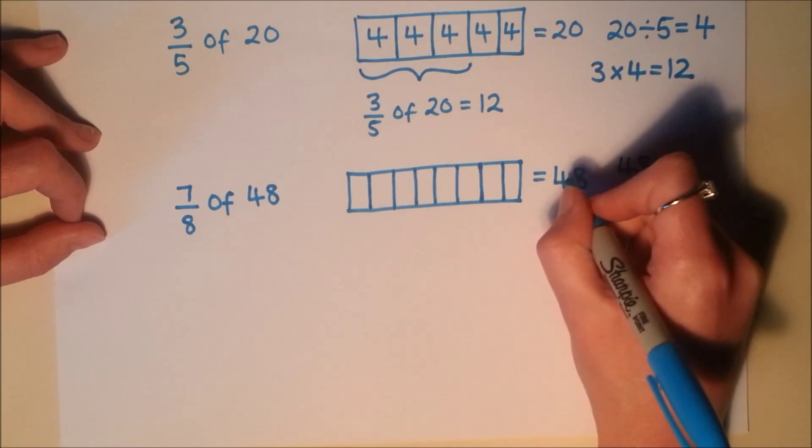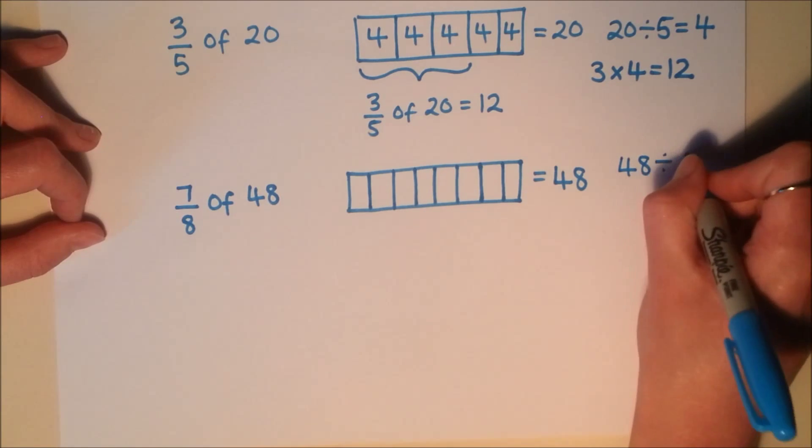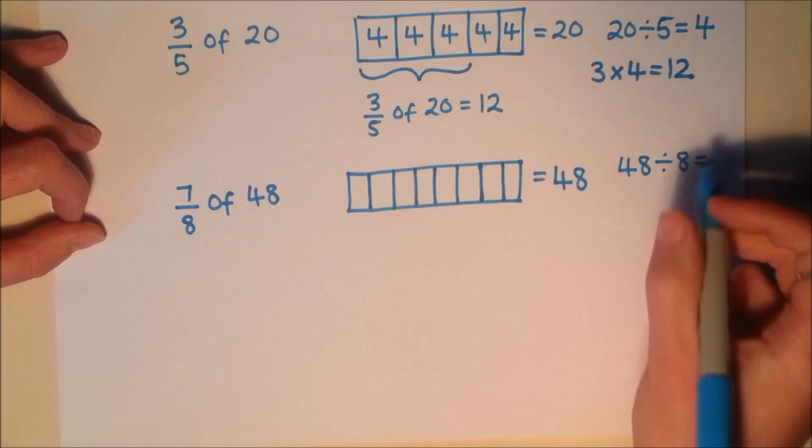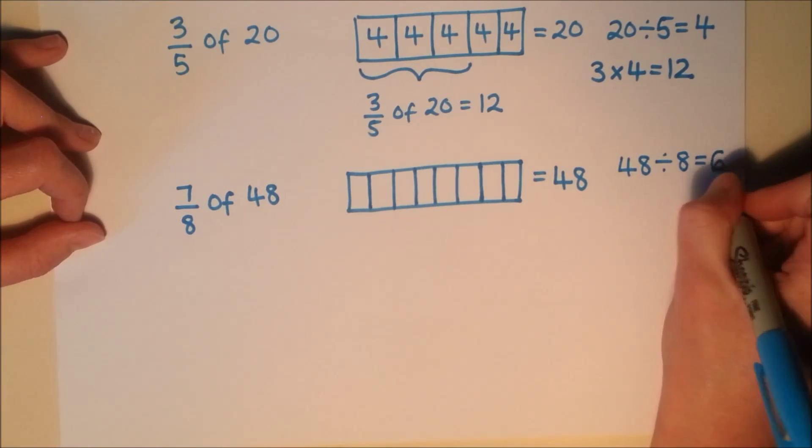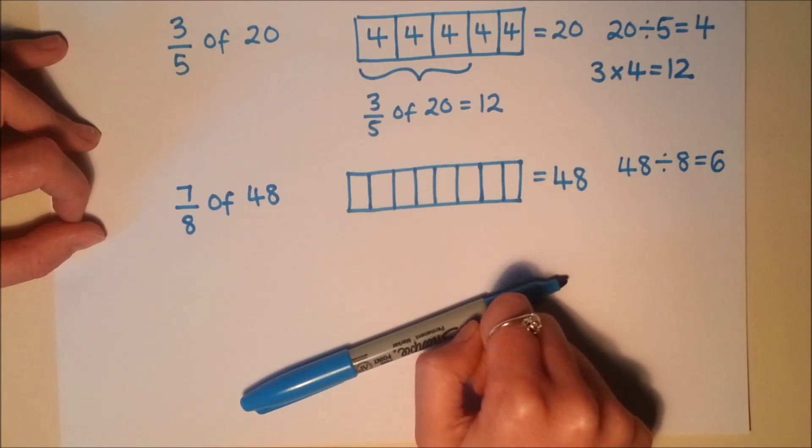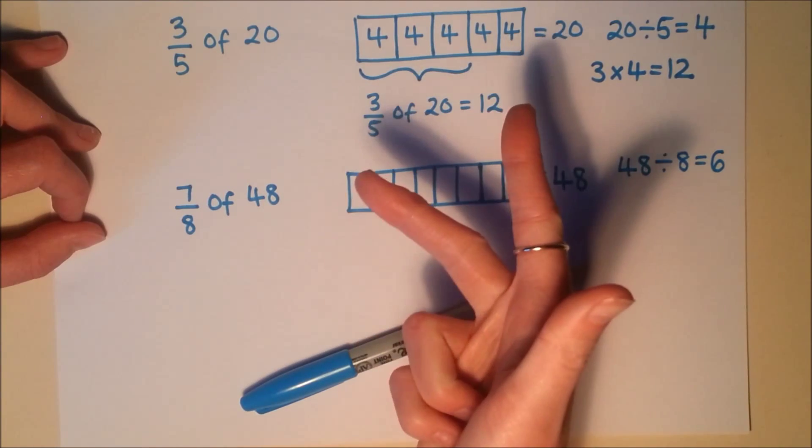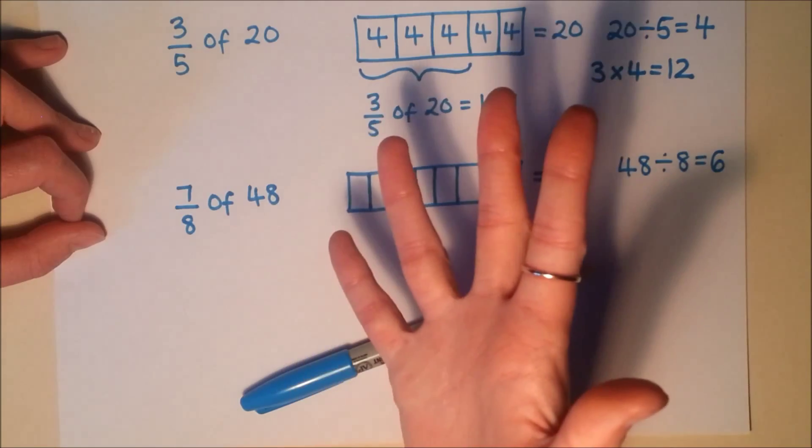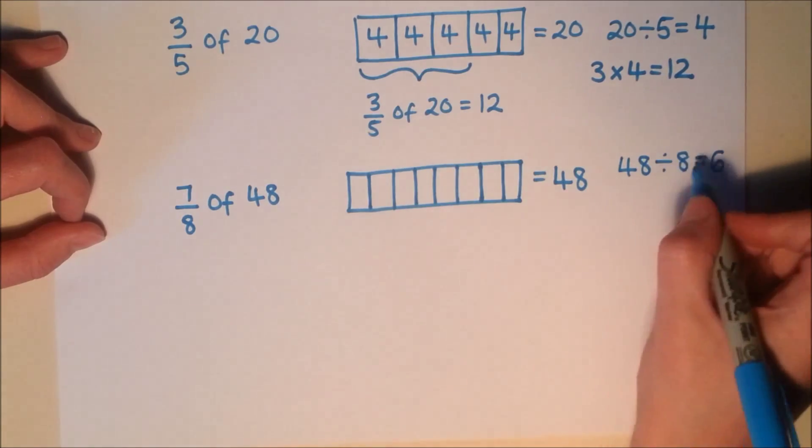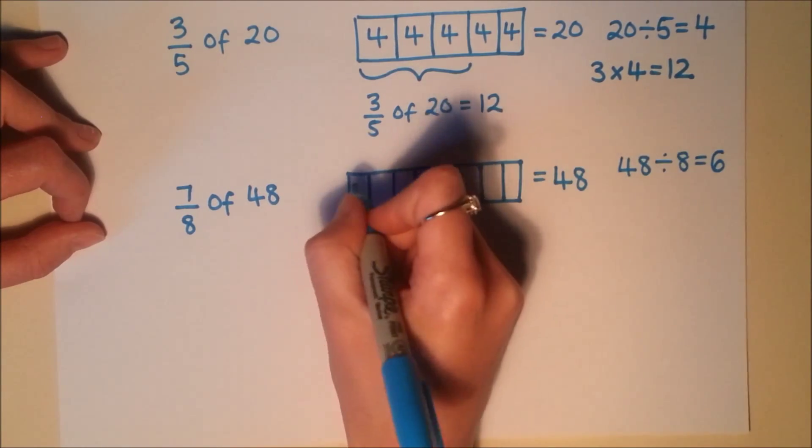I'm now going to share 48 into 8 equal shares and work out what that is. So from your times tables, that's 6. But if you weren't sure, 8, 16, 24, 32, 40, 48. So 8 goes into 48 six times.